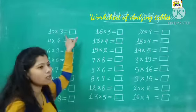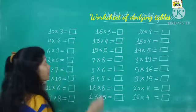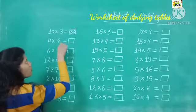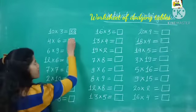First is 10 threes are. Now what is 10 threes are? 10 threes are 30. Very good. 4 sixes are. What is 4 sixes are? 24.